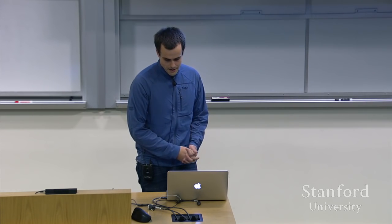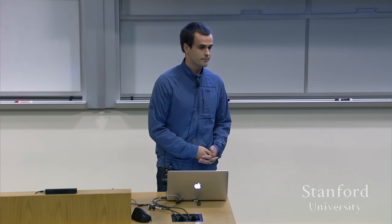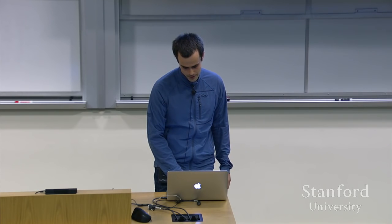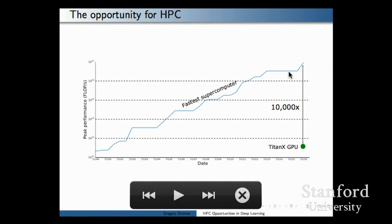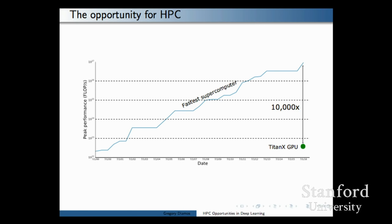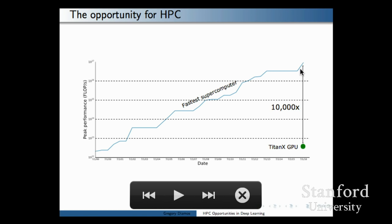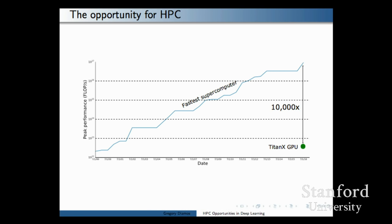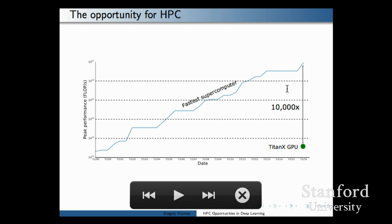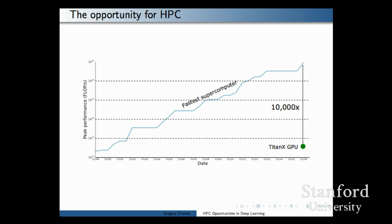The state of the art is running deep learning training on one or a few GPUs. But there's a huge gap between one or a few GPUs and the biggest supercomputer we could build. A Titan X GPU sits at one data point, and the gap between that single GPU and the largest publicly available supercomputer is about 10,000 times. The top 500 supercomputer list is what this data is based on, and there are definitely faster computers than this — not on the public list. There's probably at least one or two more orders of magnitude in there.